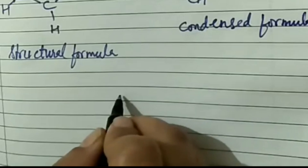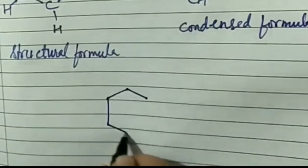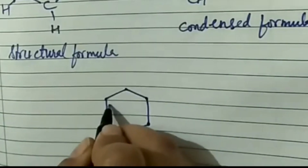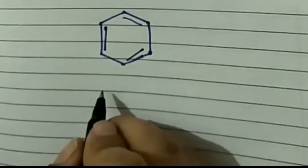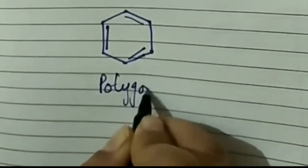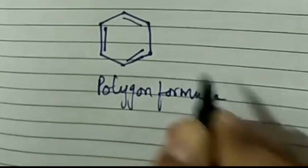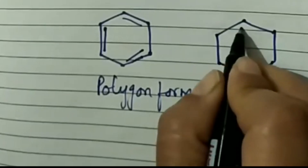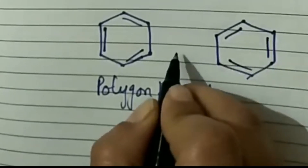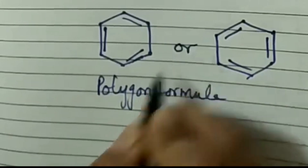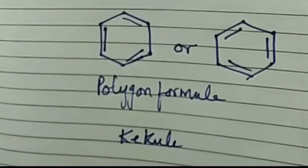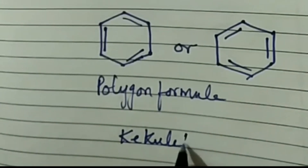Now let us write the polygon formula for benzene. To write the polygon formula, we draw a hexagon where each vertex represents a carbon atom and the lines represent bonds. Because of the alternate single and double bonds, the double bonds can be present between carbons 1-2 or carbons 2-3. The polygon formula for benzene can be written in both these ways. These structures were proposed by Kekulé, a German scientist, and are known as Kekulé's structures.